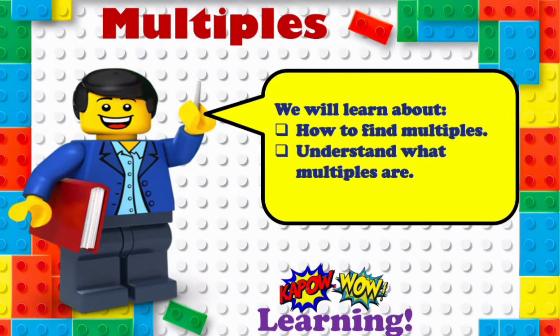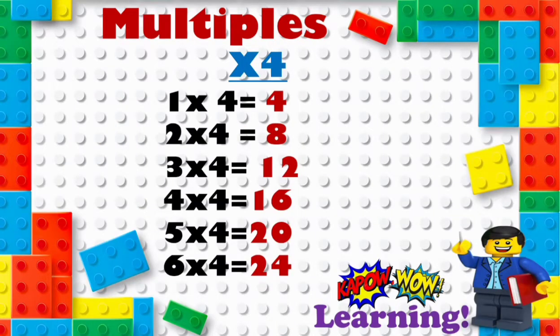You can pause this and play as many times you wish and re-watch it again. So here are the four times tables: one times four is four, two times four is eight, three times four is twelve, four times four is sixteen, five times four is twenty, six times four is twenty-four.